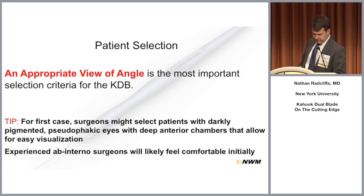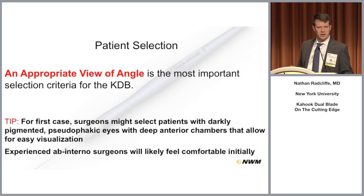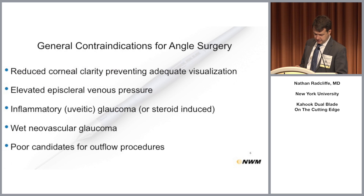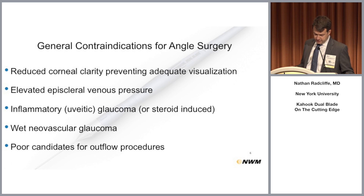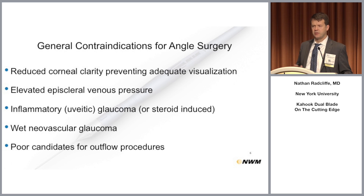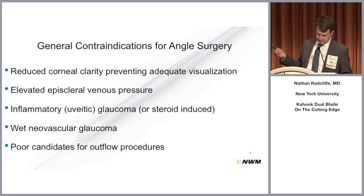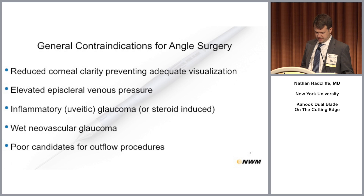You want to get a good view of the angle and picking a case with dark pigment is always a good idea. There are some patients where you might not want to do angle surgery: if you don't have a good view, elevated episcleral venous pressure, inflammatory glaucomas, wet neovascular glaucoma. People who are poor candidates for outflow procedures are important to consider. This procedure is primarily indicated for open-angle glaucoma.